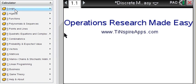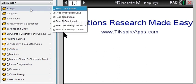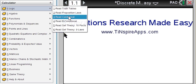When you look through the menu, we have here 15 menu items, starting with logic, where you can read about truth tables, set theory, etc.